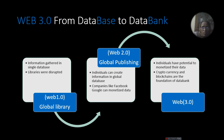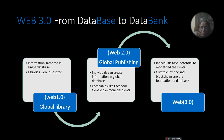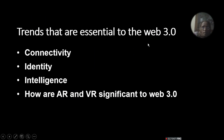The second phase was global publishing, where individuals could create information in a global database. Companies like Facebook and Google could monetize data. People could create data and their own websites. In Web 3, individuals have the potential to monetize their own data. Cryptocurrency and blockchains are the foundation of the data bank, and you can directly access your information.